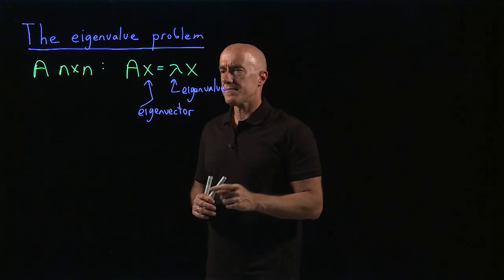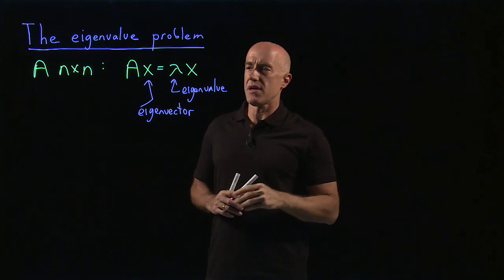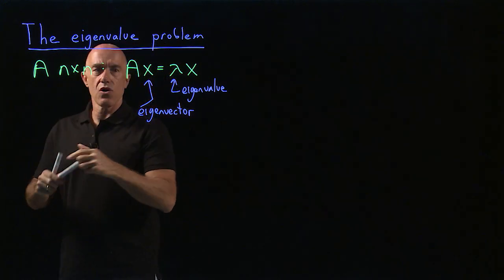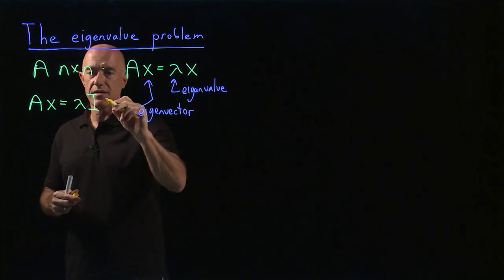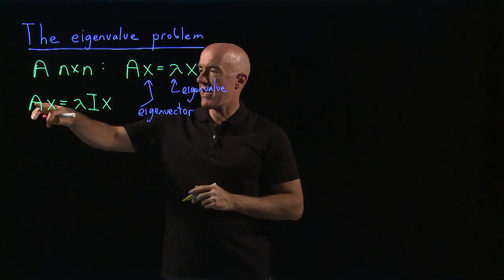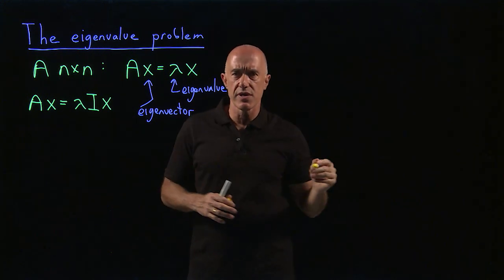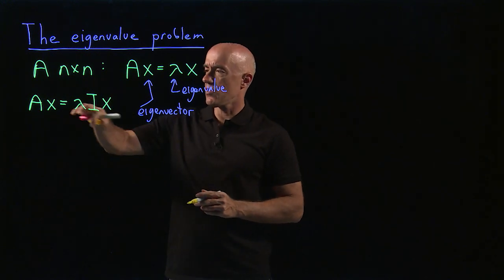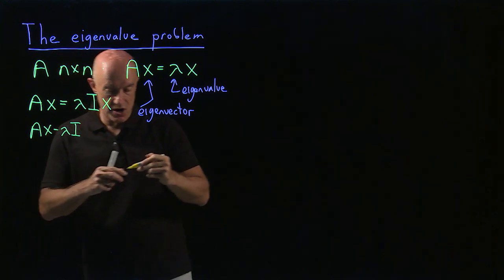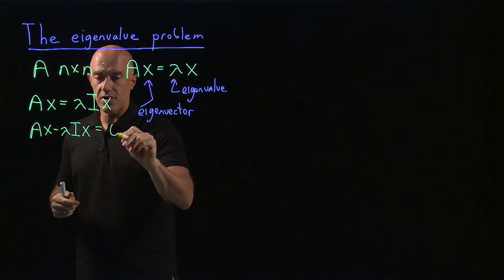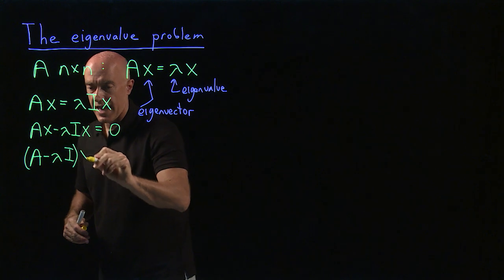So how do you tackle this problem? A is an n by n matrix. The way to do this is to introduce an n by n matrix on the right hand side of this equation. All we need to do is introduce the identity matrix. So AX equals lambda, and then we sneak in an n by n identity matrix on the right hand side. So now we have an n by n matrix times a column vector X equals an n by n matrix. Lambda I is just a matrix with lambda going down the diagonals times another column vector. We can regroup the terms and write A minus lambda I times X equals zero.